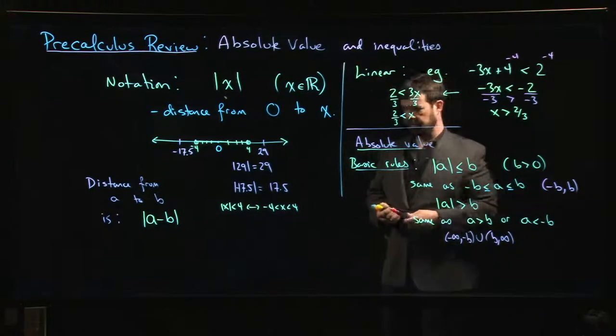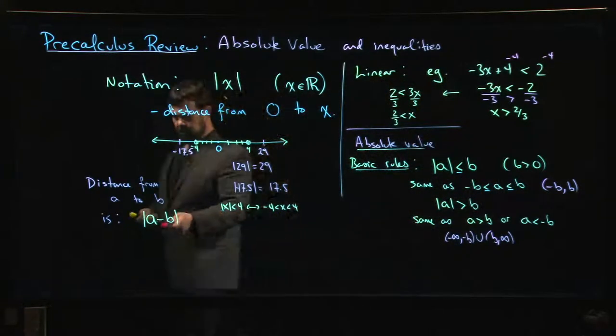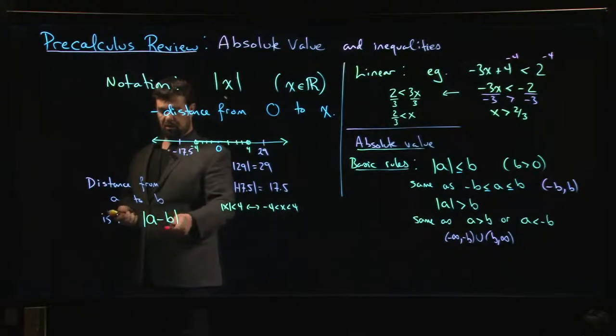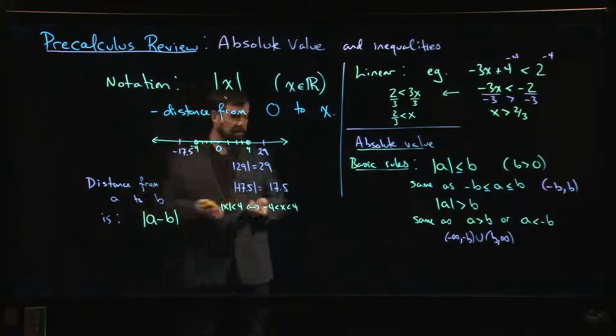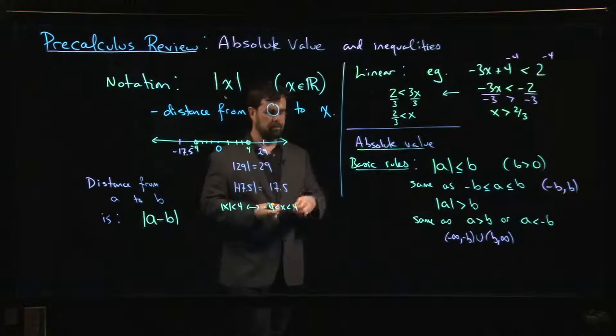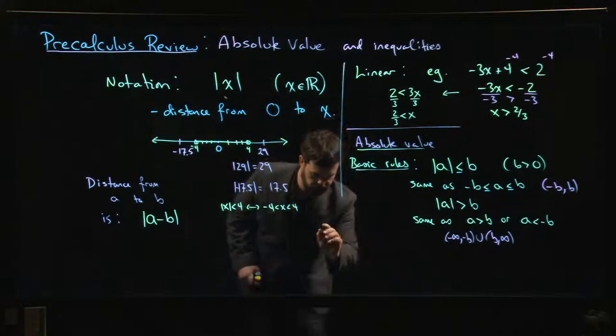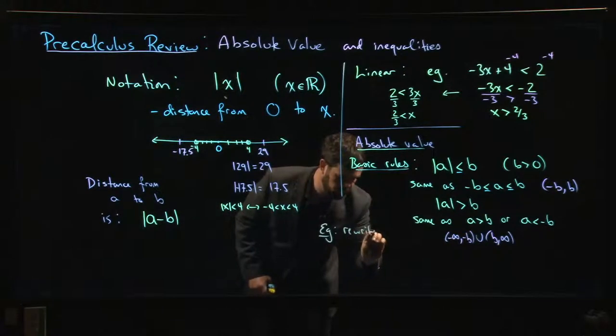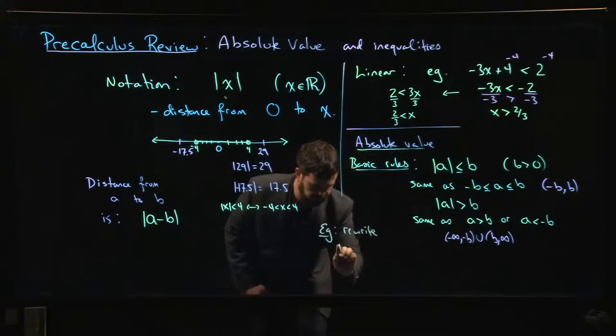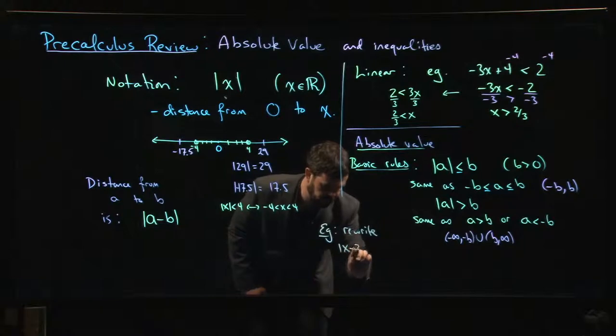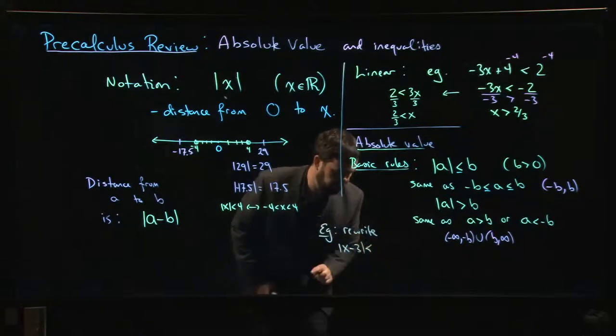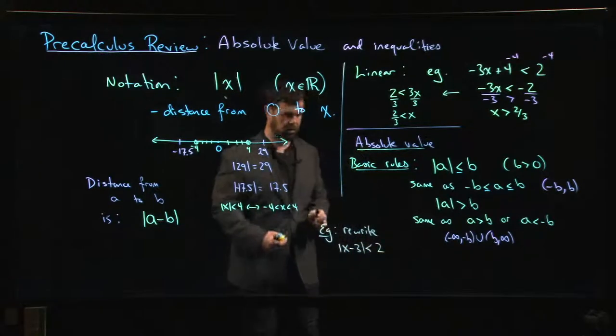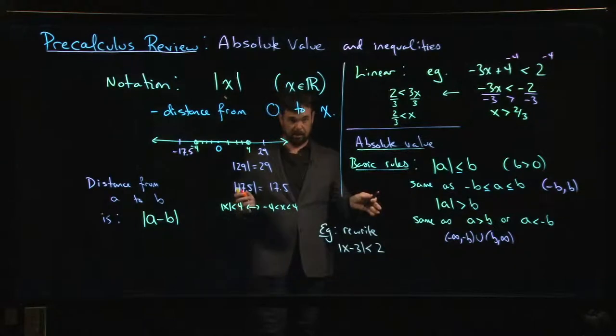The context that you're probably going to see a lot is you're going to be measuring the distance between two numbers. So you're going to have a lot of things where you have to rewrite something like absolute value of x minus 3 is less than 2. That's going to come up. Something like this comes up quite a bit.